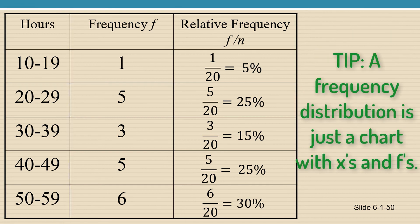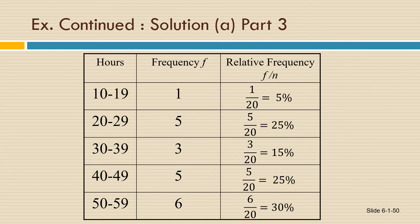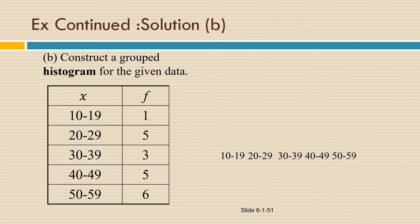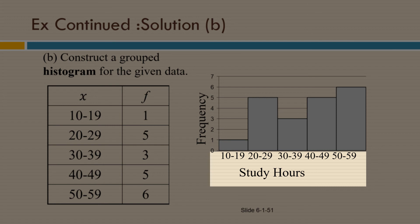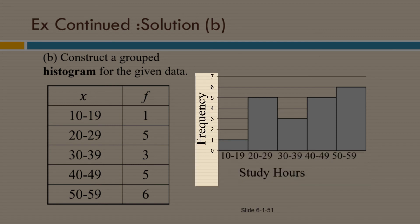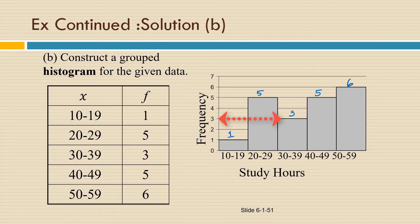Again, a frequency distribution is just a chart that lists all the data values or classes of data values and their frequencies. We were also asked to construct a grouped histogram, a chart with the data classes along the horizontal and the frequencies along the vertical axes. So in this case, the horizontal axis represents the number of study hours and the vertical axis is a frequency or number of students who reported that number of study hours. So the heights of the rectangles correspond to the frequencies of the classes.